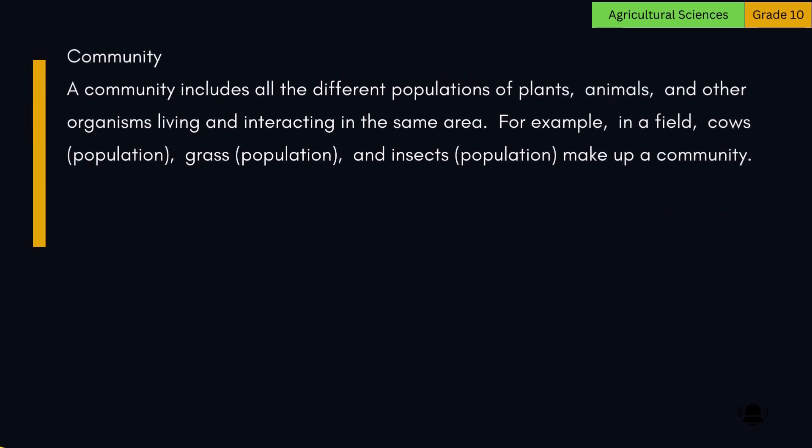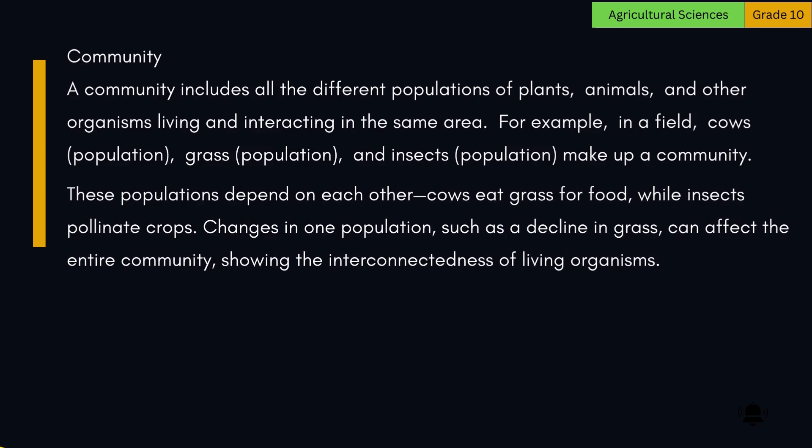A community includes all the different populations of plants, animals, and other organisms living and interacting in the same area. For example, in a field, a cows population, a grass population, and an insects population make up a community. These populations depend on each other — cows eat grass for food, while insects pollinate crops. Changes in one population, such as a decline in grass, can affect the entire community, showing the interconnectedness of living organisms.